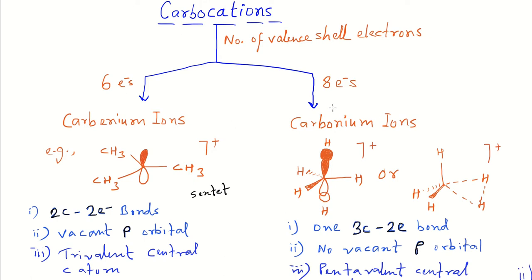The other type of carbocations is carbonium ions. This is a special type of carbocation that you will encounter less often, because the formation of this type involves very harsh reaction conditions. We will discuss the formation of carbonium ions and first understand their structures and properties.